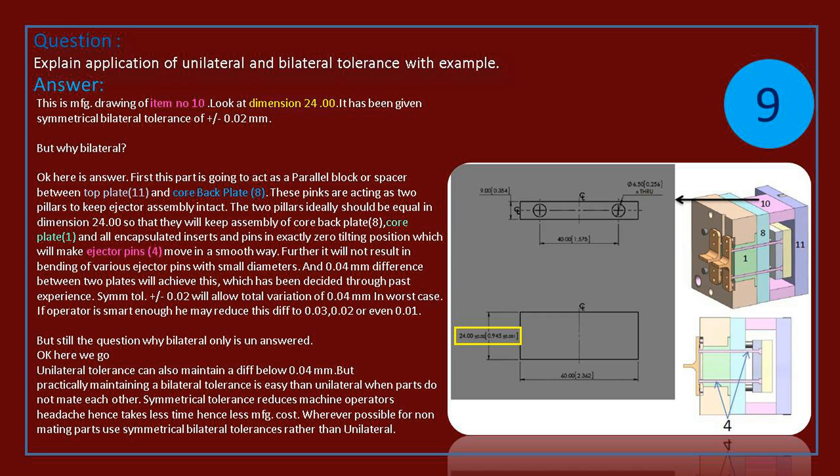Okay, here is answer. First, this part is going to act as a parallel block or spacer between top plate and core back plate. These pins are acting as two pillars to keep ejector assembly intact. The two pillars ideally should be equal in dimension 24,